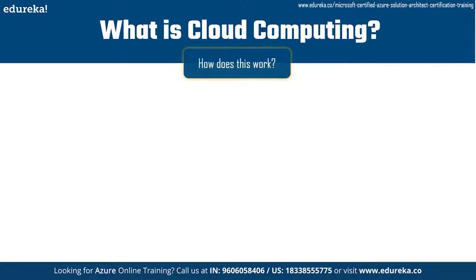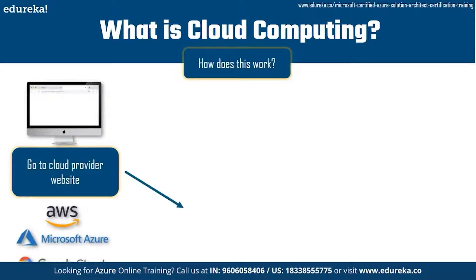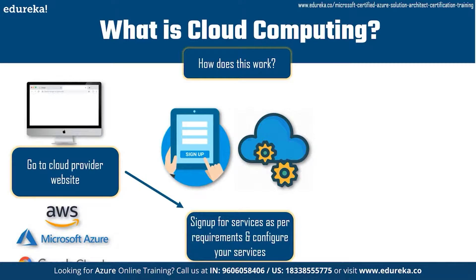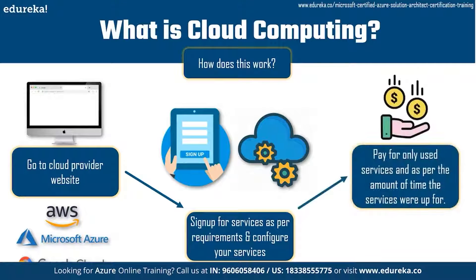So how does this work? First, John goes to whichever cloud provider he likes most — Amazon Web Services, Microsoft Azure, and Google Cloud are the top providers. He signs up for an account, signs up for the services per his requirements, and configures the resources he needs for his app. The amazing thing is that he only pays for the services he uses and for the amount of time those services were running.